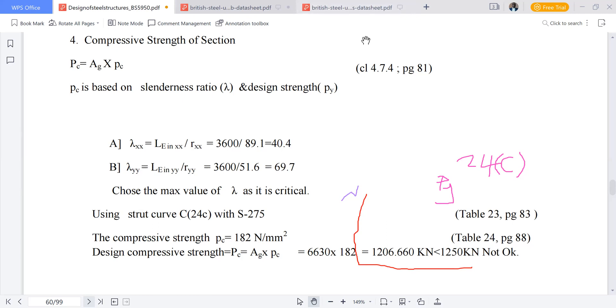From lambda, I will identify 69.7. So we have 69.7, and then I have 275 as my py design strength. Their meeting point, where they will meet here, that would be my value of pc. Remember it is Table 24c.